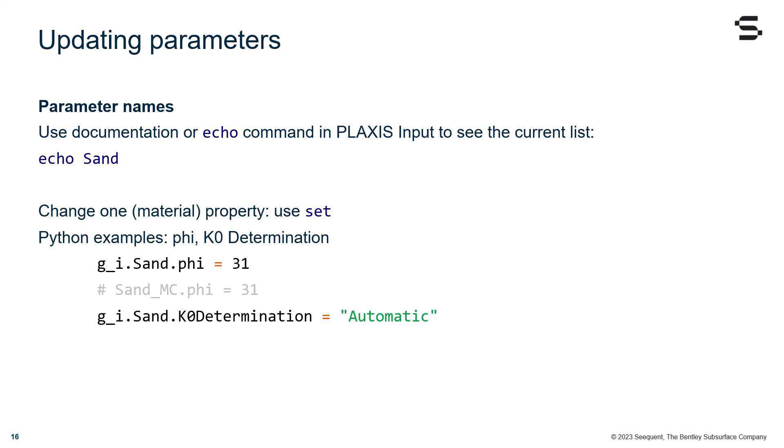Remember that to change one single property, you can use the set command. Let's quickly see some Python examples for phi and the K0 determination.